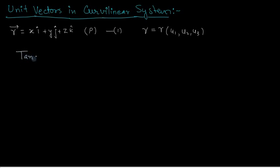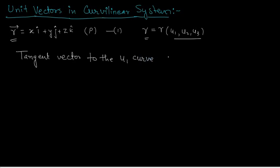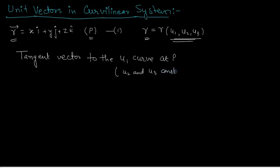What is a tangent vector? The vector r can be written as a function of u1, u2, u3. The tangent vector to the u1 curve at point P — remember the u1 curve is where u2 and u3 are constants, u2 = c2 and u3 = c3. The tangent vector is given by the partial derivative del r / del u1, and that is the tangent vector at point P.